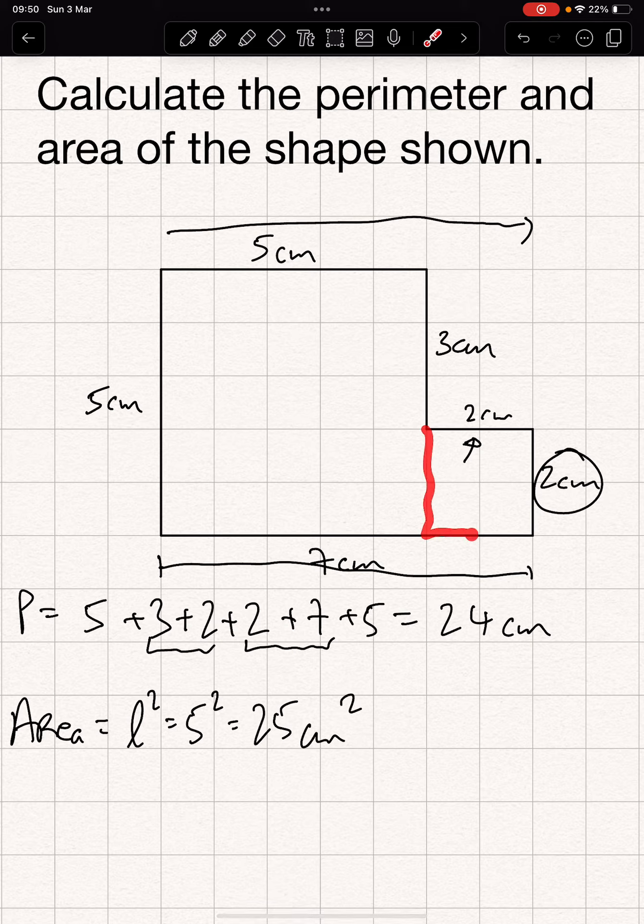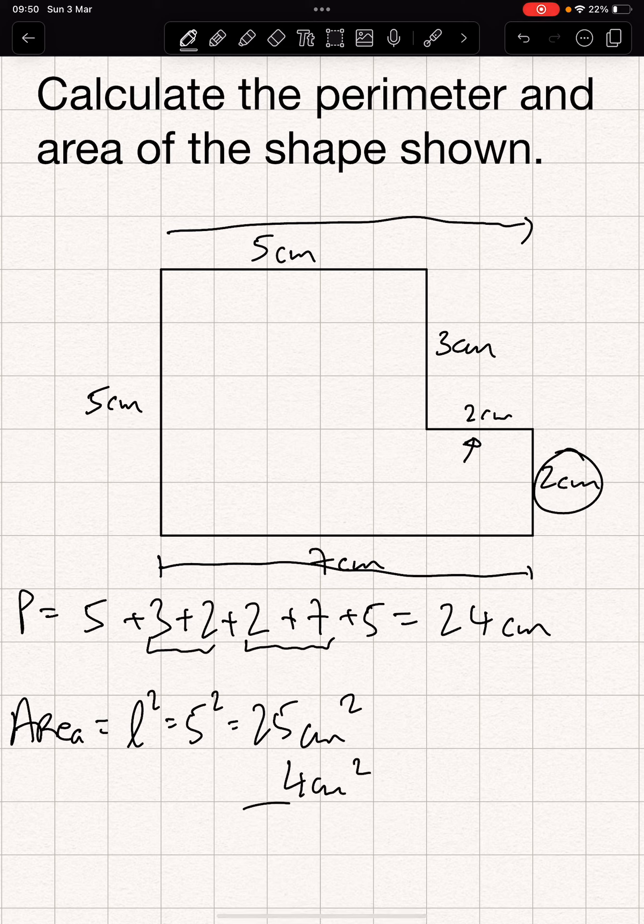And then we have to add on the small box, and that's a 2 by 2. Two 2s are 4, so that's going to be 4 squared centimeters. Add them together, and we get 29 squared centimeters.